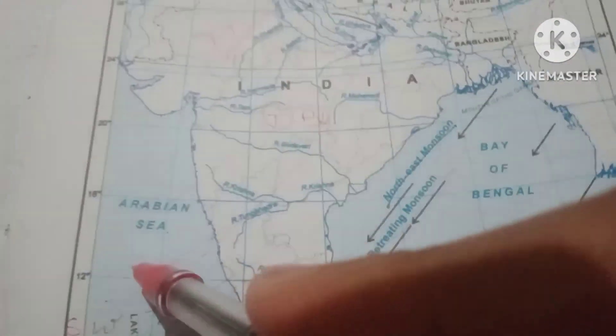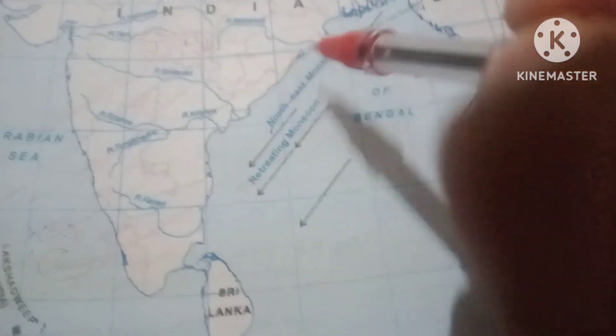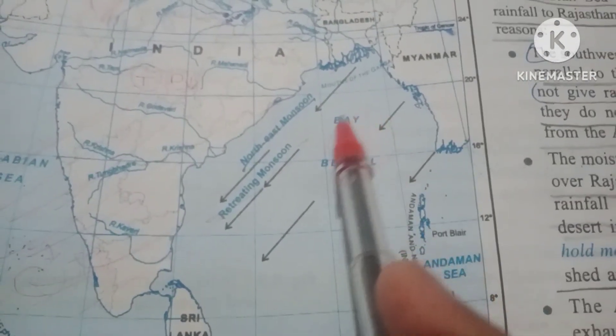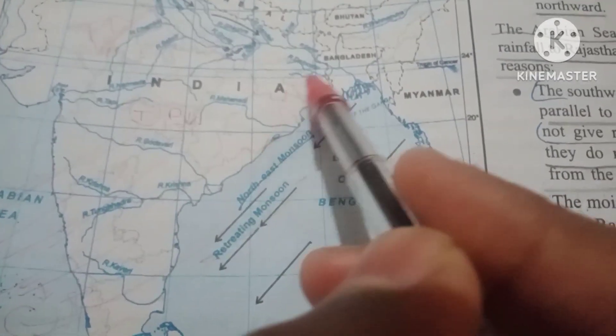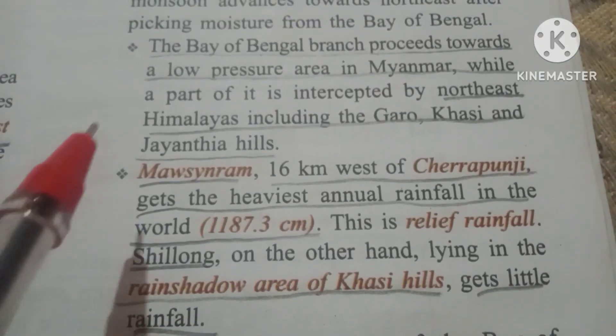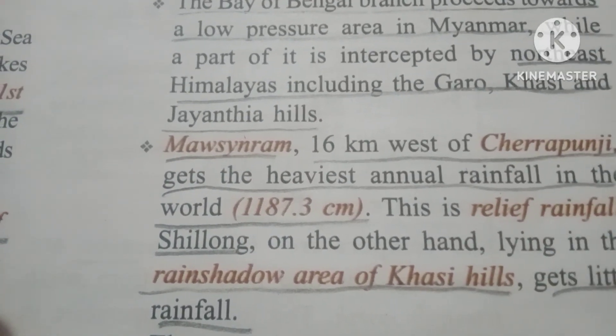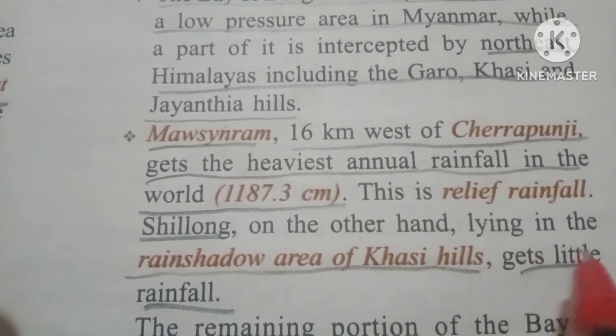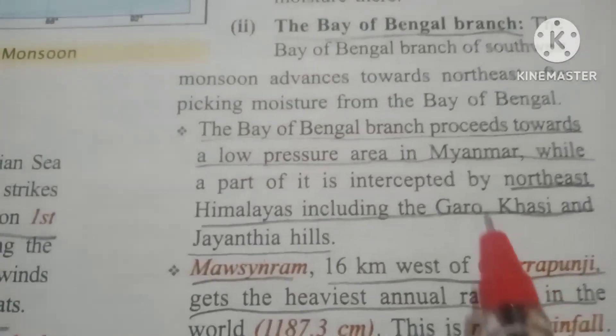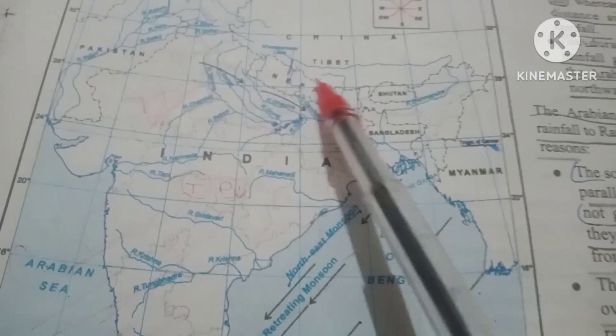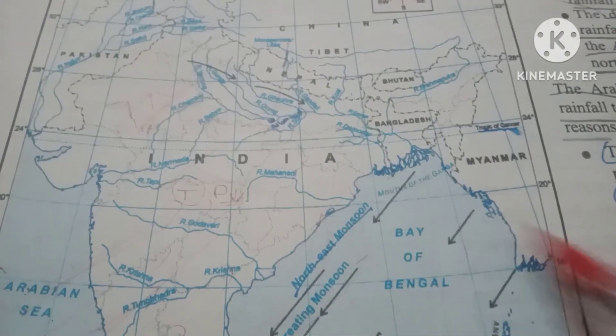The Bay of Bengal branch passes over the Bay of Bengal, picks up moisture, and gives heavy rainfall to the Garo, Khasi, and Jaintia Hills — particularly Mawsynram and Cherrapunji in Meghalaya, which receives the highest rainfall. This is a relief or mountain type of rainfall. The rain shadow area of the Khasi Hills gets little rainfall from this branch, whereas the Khasi, Garo, and Jaintia Hills get heavy rainfall. The Bay of Bengal branch moves toward the Himalayas and sheds its moisture there, not going further into China or Tibet.